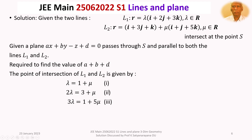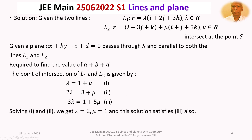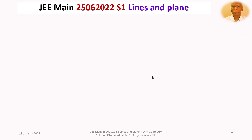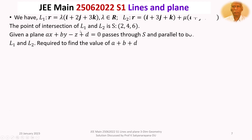Solving equations 1 and 2 for λ and μ, we get λ = 2 and μ = 1, and this solution also satisfies the third equation. Therefore, substituting λ = 2 into L1, the point of intersection of L1 and L2 is S = (2, 4, 6).